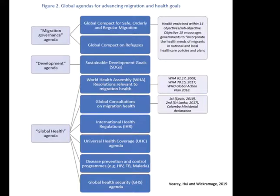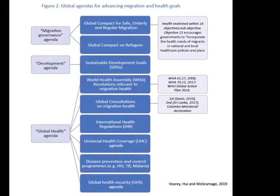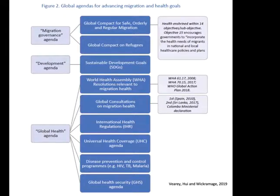This comes from a recently published chapter in the 2020 World Migration Report — for the first time, there was a chapter included on migration and health. This gives you an idea of how many global agendas are intersecting with the field. It emphasises that migration is a cross-cutting issue across many health targets, health goals, and global health agendas, and equally that health needs to be more squarely understood as cross-cutting within other spaces.